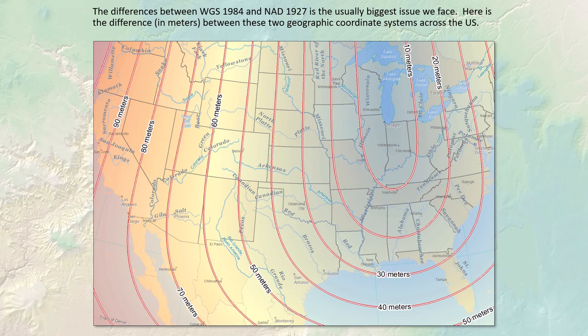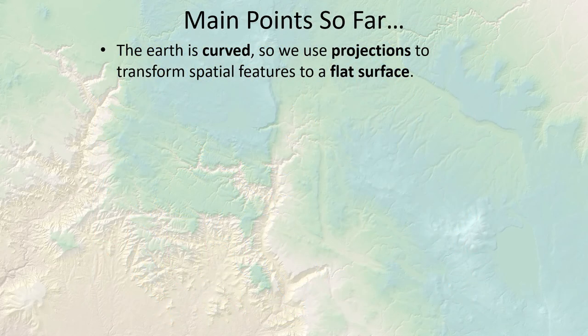The biggest datum-related issue we usually deal with in the United States is the difference between WGS 84 and NAD 27, because so much old NAD 27 data is still floating around. This map shows the difference in meters between these two coordinate systems across the United States — if you think coordinates are in WGS 84 but they're actually in NAD 27, the error ranges from around 66 meters in Flagstaff up to over 90 meters in California. Chicago appears to be the one place where they happen to line up.